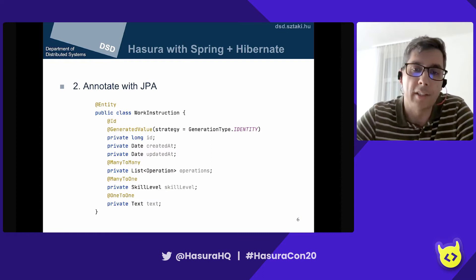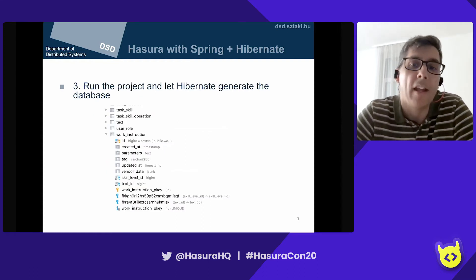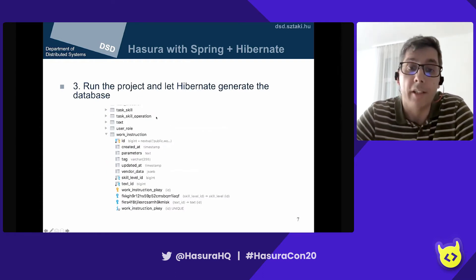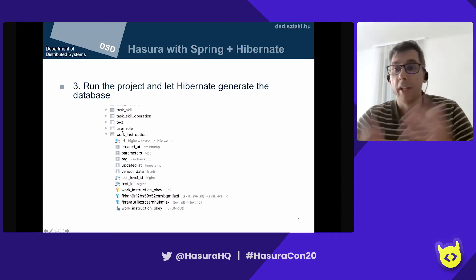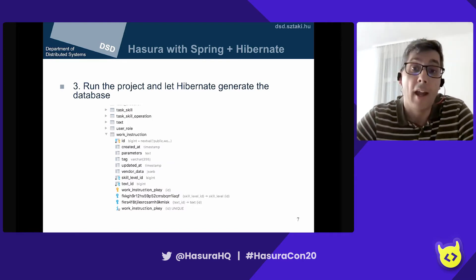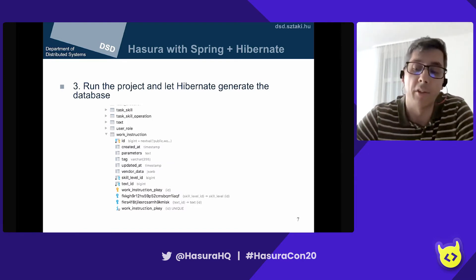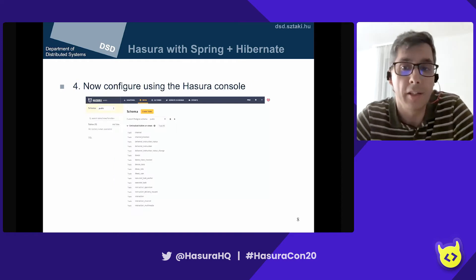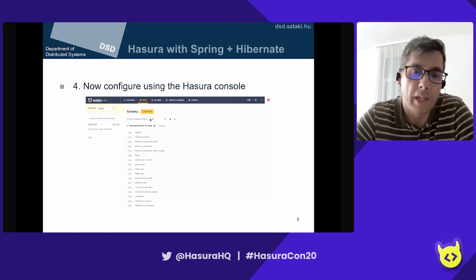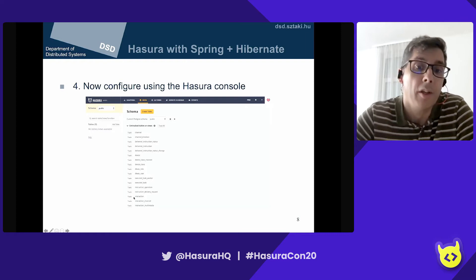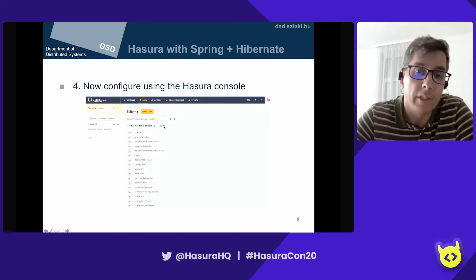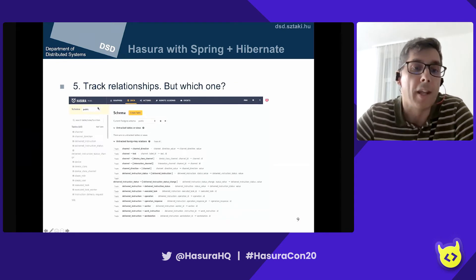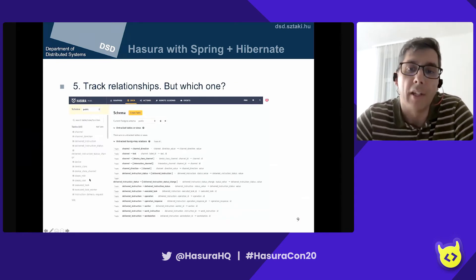Once I have the Java model, I add Java persistence annotations to define how the object should be mapped to the database — the operations as a many-to-many association, the skill level as many-to-one, and the work instruction text owned by the work instruction itself. I run my application and Hibernate generates the database schema. Now I have my database ready, I go to the Hasura console and track all my tables to make them available to Hasura.